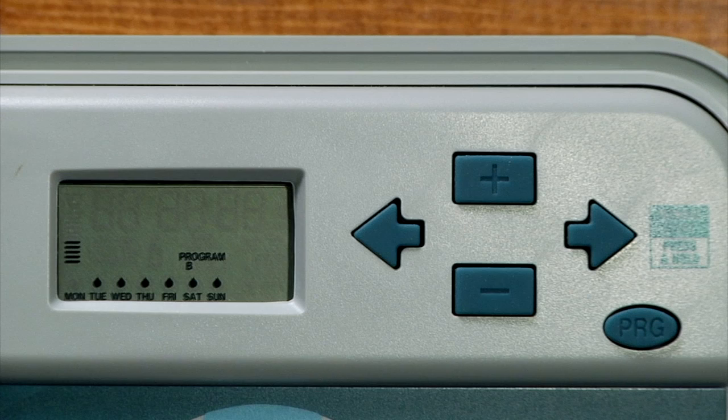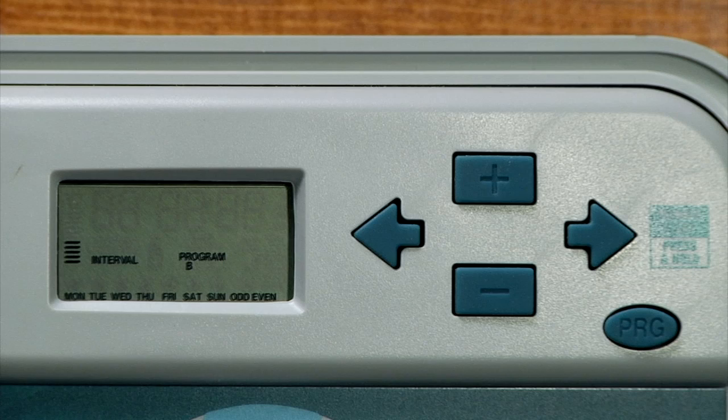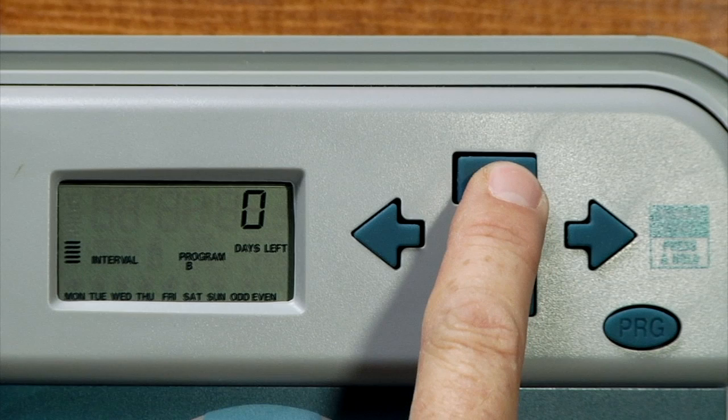In the water days position, we'll see the seven days a week across the bottom. To access the interval mode with the first day of the week flashing, simply hit the left arrow one time. You'll notice a large number appear on the top of the screen—that's the interval number.